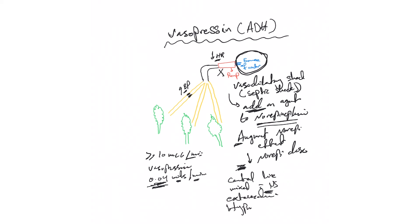Also, one other indication outside of shock: if you don't have octreotide in your hospital, you can use it for esophageal varices bleed. Of course, some use it to treat diabetes insipidus, but this is not our topic.